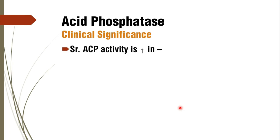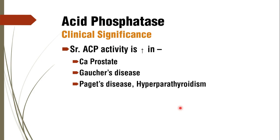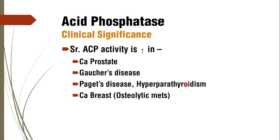Coming to the clinical significance of Acid Phosphatase, its activity is found to be increased in CA prostate, Gaucher's disease, Paget's disease, and hyperparathyroidism, because acid phosphatase is primarily found in high concentration in prostate and bone tissue. In Paget's disease, osteoclastic activity is increased. Hyperparathyroidism increases osteoclastic activity in bone, so ACP expression increases since acid phosphatase is present in osteoclasts, not osteoblasts. CA breast with osteolytic metastases going to bone and causing lytic lesions will also show increased acid phosphatase activity.